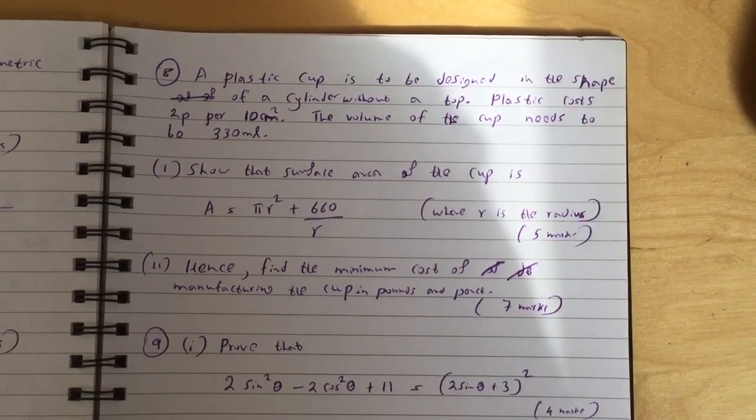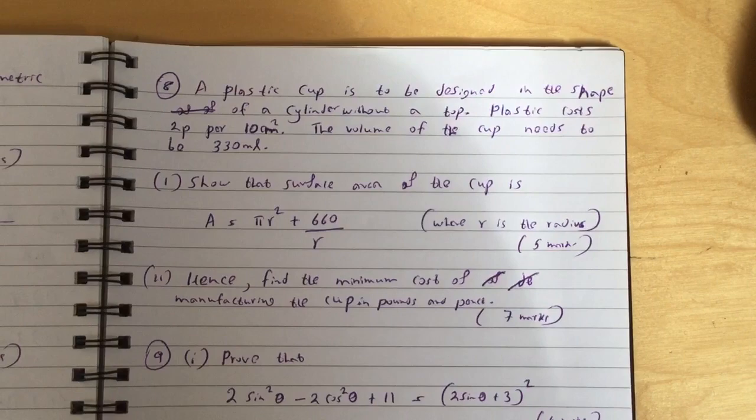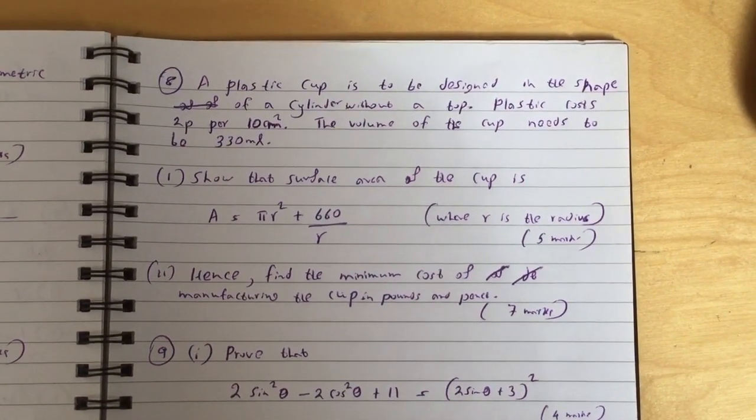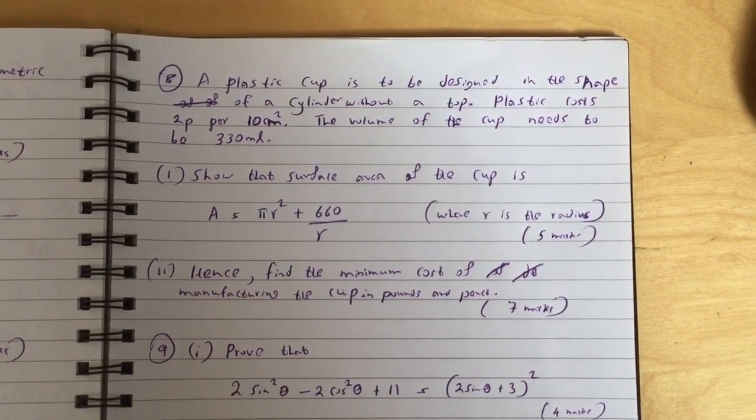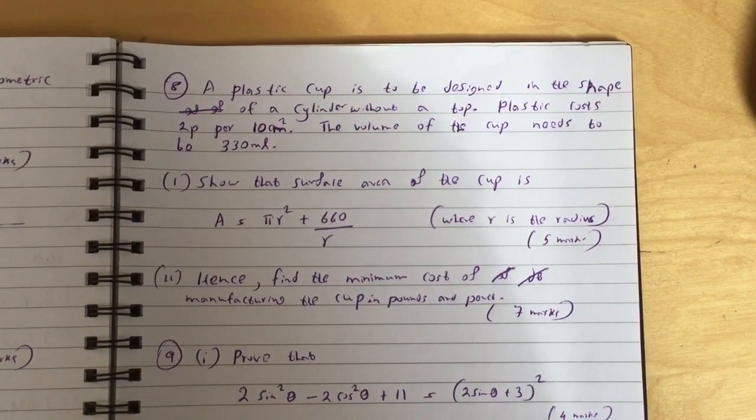Question eight: a plastic cup is to be designed in the shape of a cylinder without a top. Plastic costs 2p per 10 centimeters squared. The volume of the cup needs to be 330 milliliters.